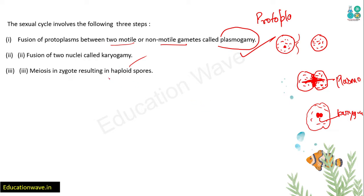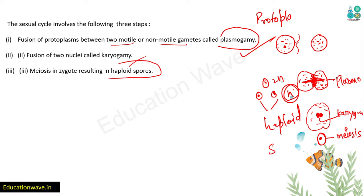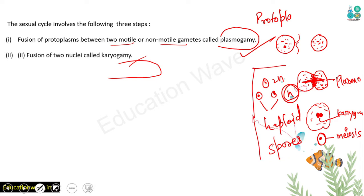After plasmogamy, karyogamy occurs - the two nuclei fuse together. Then the last step: the resulting zygote undergoes meiosis, breaking down into haploid spores. So the zygote formed undergoes meiosis - reduction division - and haploid spores are produced. This completes the sexual reproduction cycle in fungi.